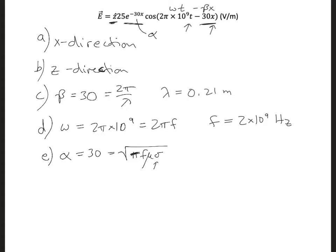In that, we have alpha is equal to 30 equals square root of pi f mu sigma. So here, you see there's a sigma. We know f. We know it's non-magnetic, so we can put mu not there. So once we solve here for sigma, that's the only unknown, we get 0.023 Siemens per meter.